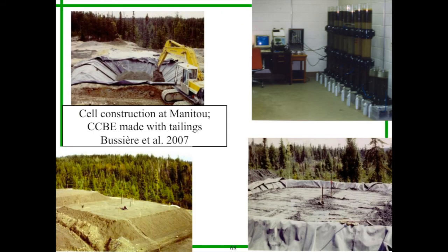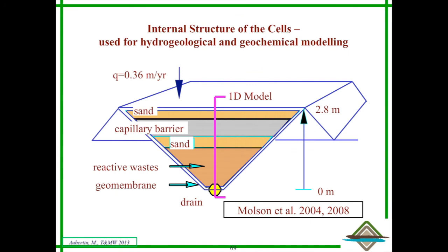This has been tested in many ways in column tests, in field experiments. What I would like to show now is a model that was developed by one of our PDFs in the past, John Molson, who is now a professor at Laval University, in conjunction with Uli Mayer, who used to be at Waterloo, is now at UBC. This allowed us to predict, and really these were predictions because none of the field work was used to make the predictions, to predict the water quality at the base of the cells. We used only laboratory data to make the predictions, based on reactive transport modeling in the code MIN3P.